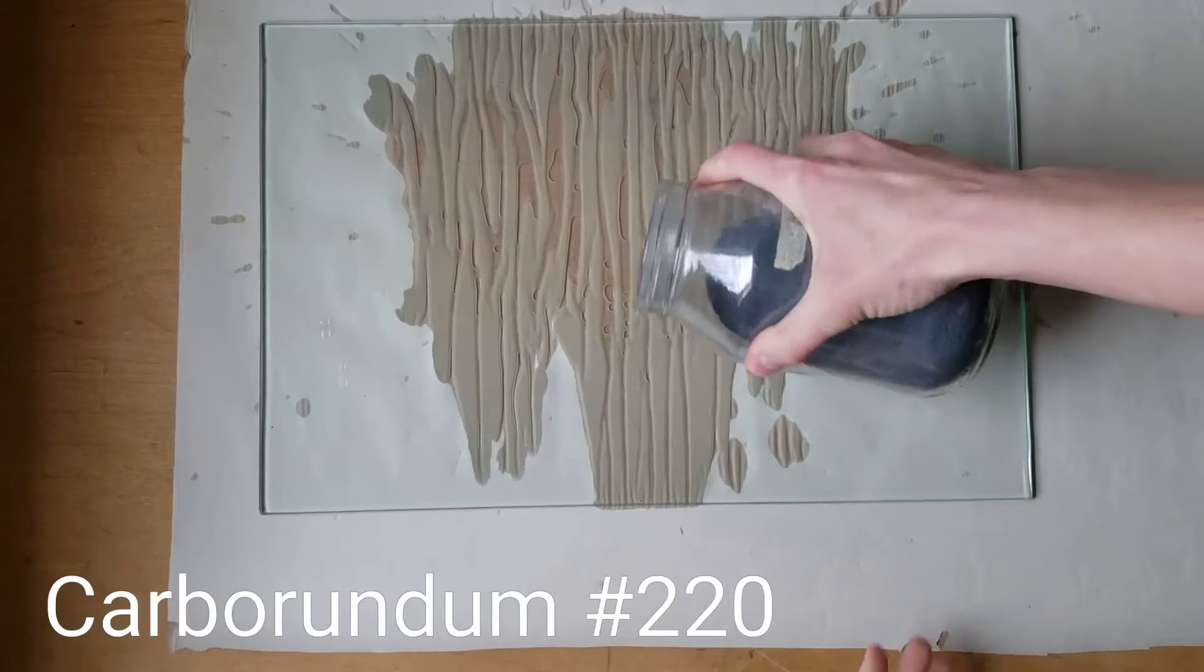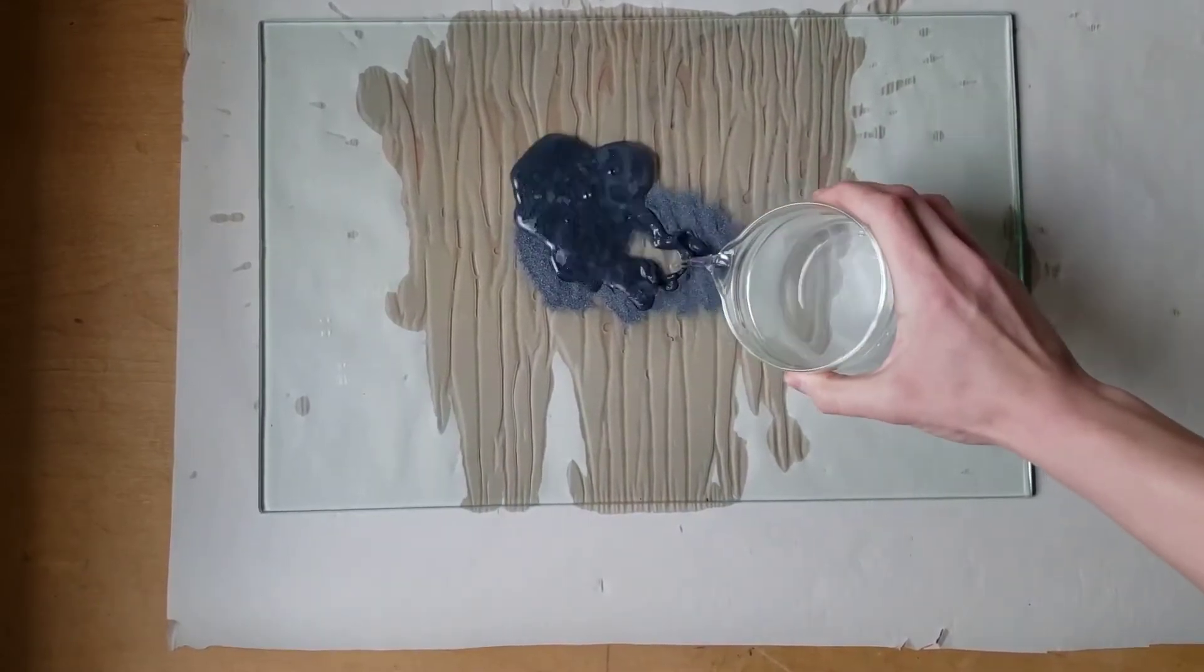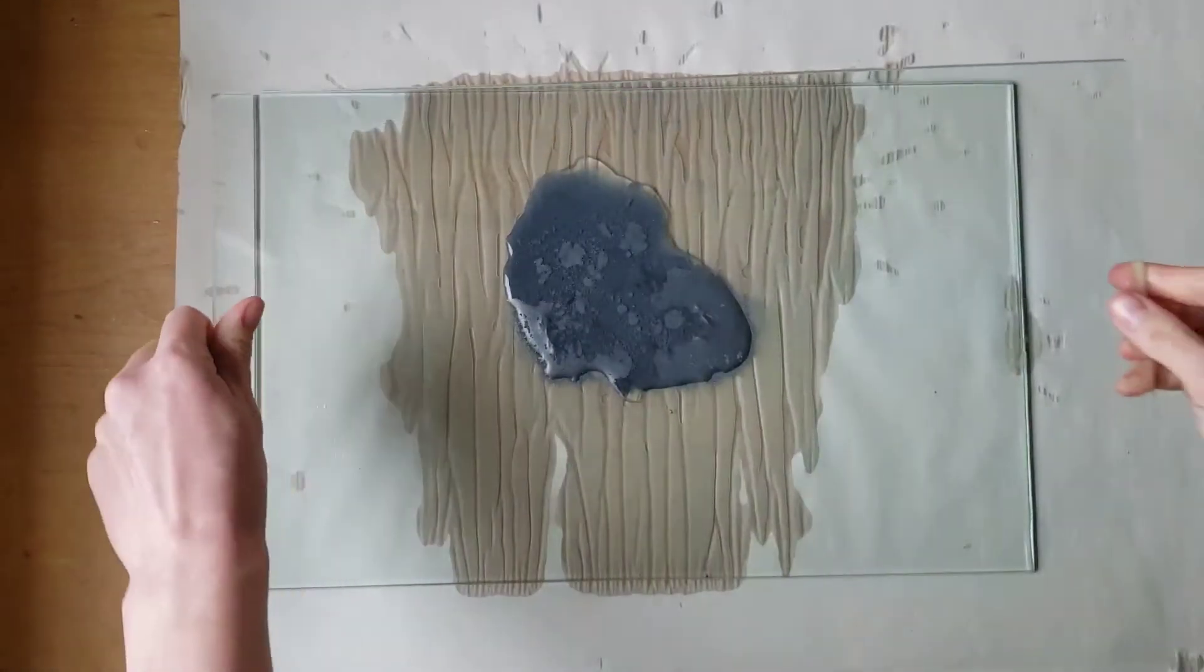Sprinkle some 220 grit carborundum on top of the glass. Then pour a little bit of water on. Place the second plate on top.